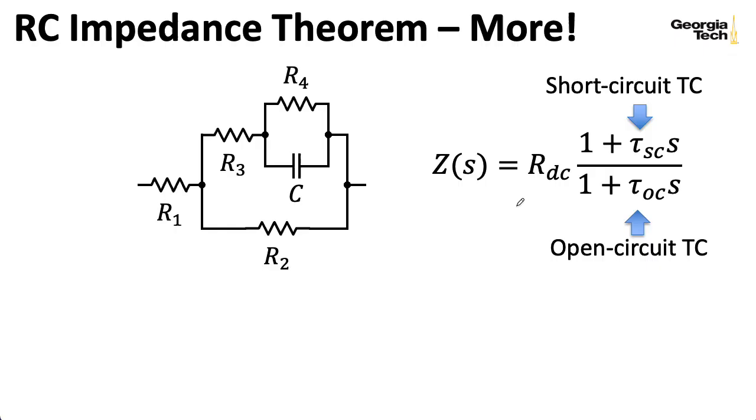Let's do a slightly more complicated example. To compute RDC, I open up this capacitor, and I wind up with R1 in series with the parallel combination. In one of the branches of that parallel combination, I have R2. And in the other branch, I'll have R3 in series with R4. Remember, we opened up the cap to compute the DC value.